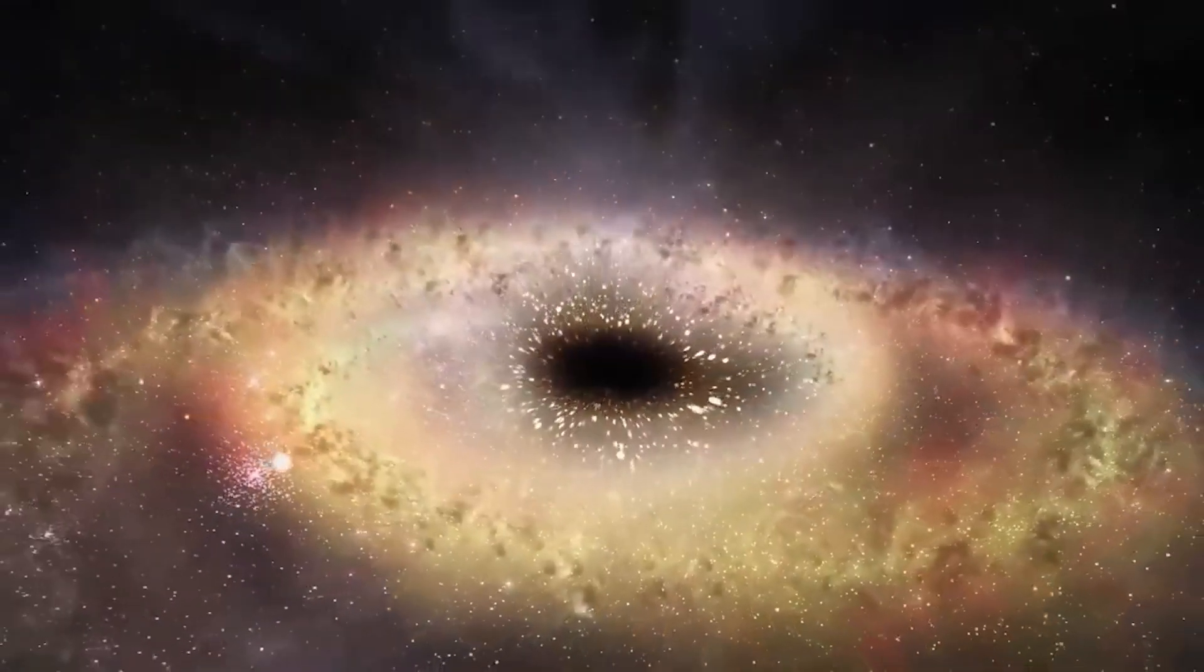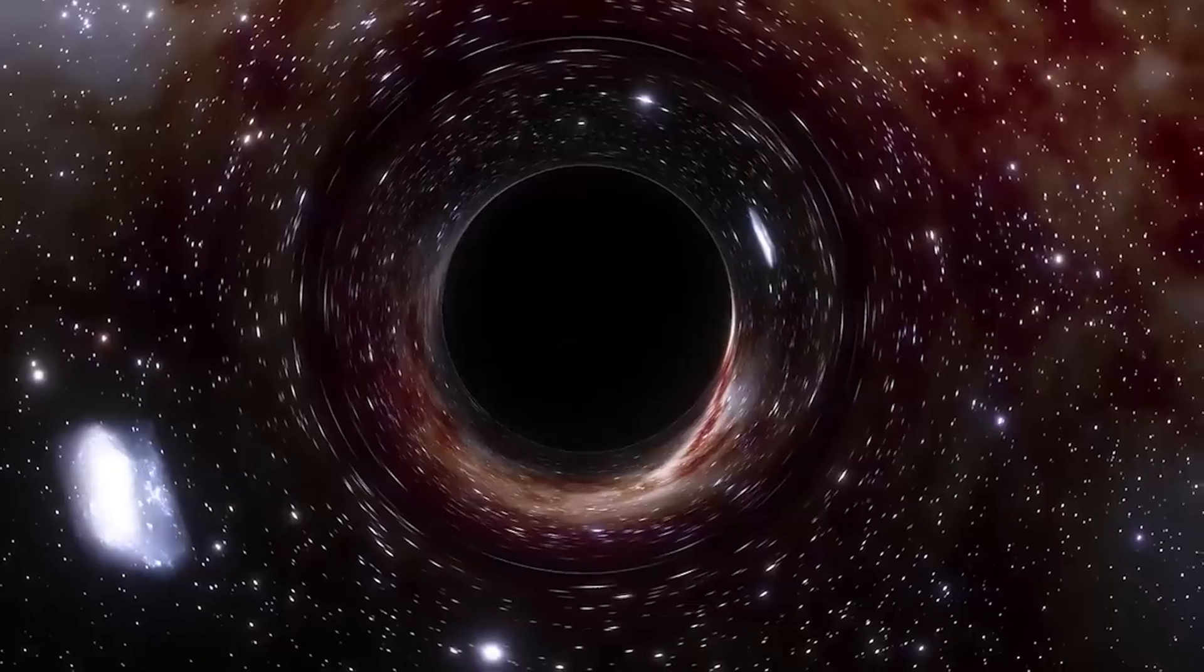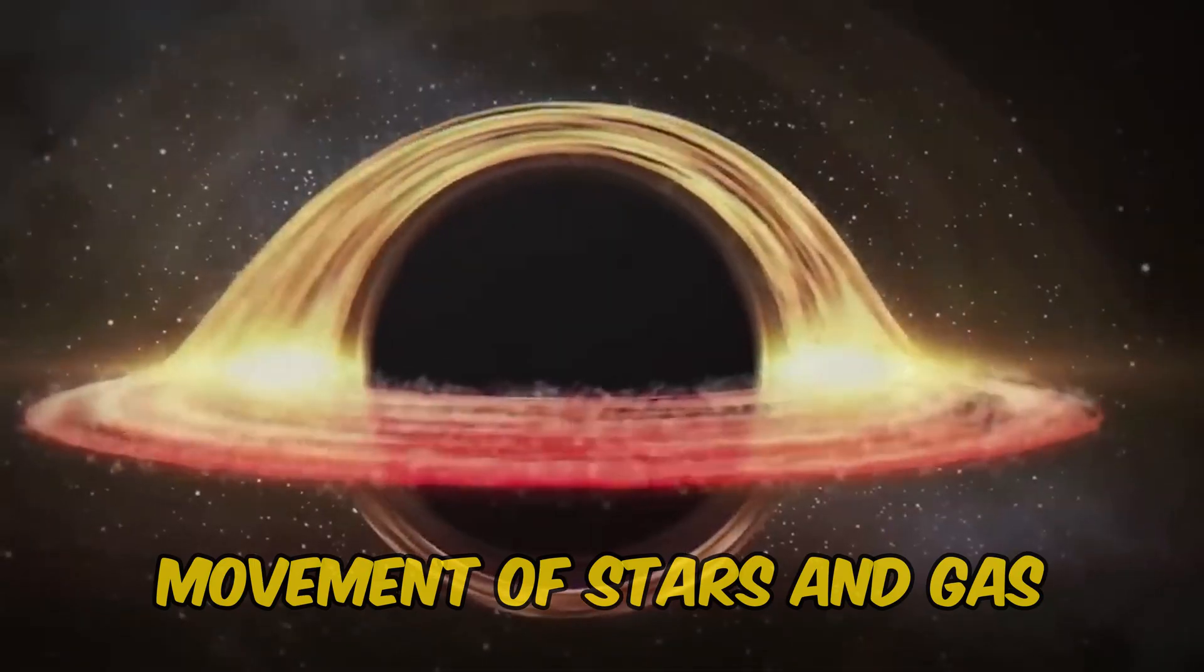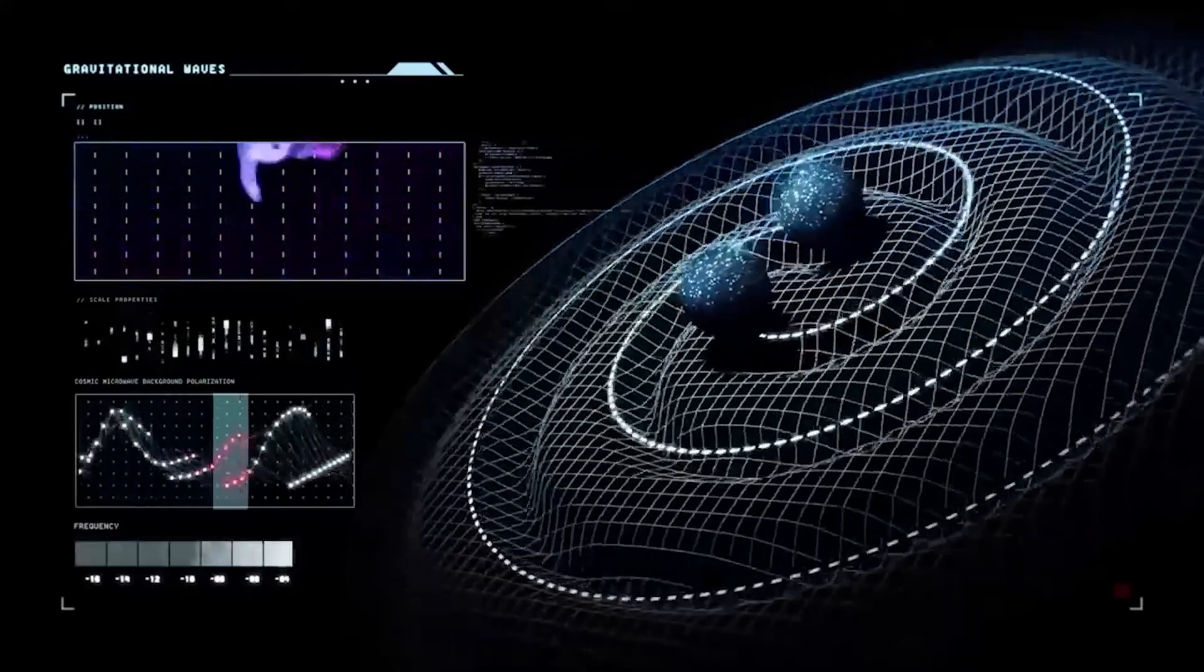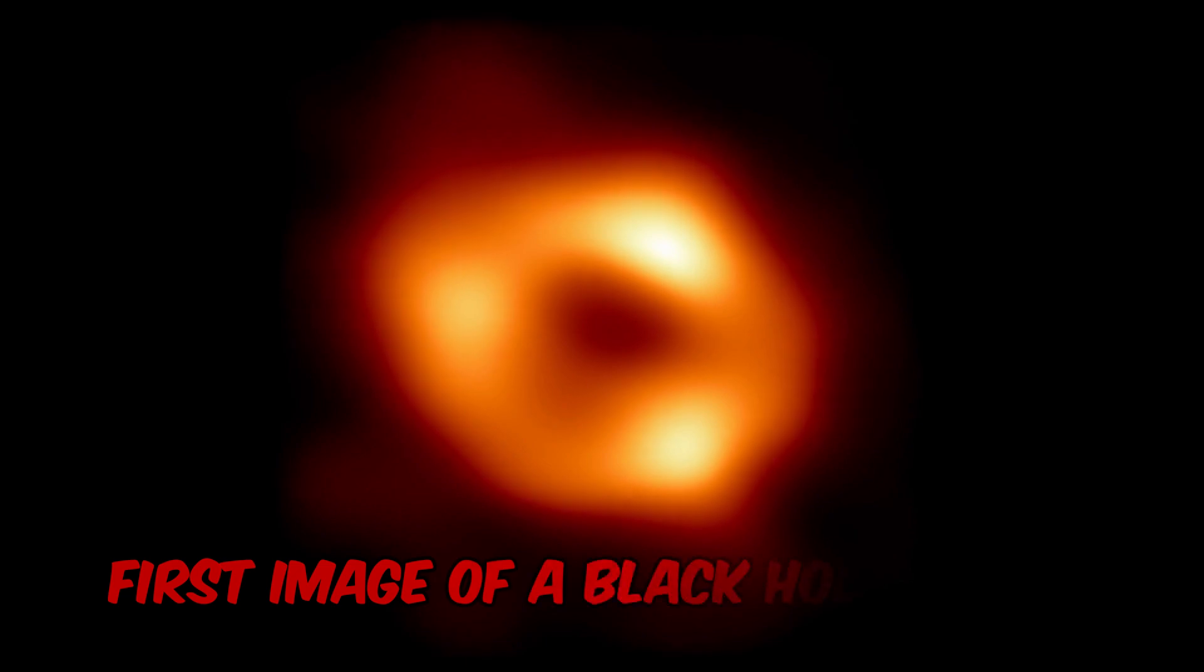Fact number 2. Let's address the intriguing fact that we can't directly observe black holes due to their immense gravitational pull. However, we can detect their presence by studying the movement of stars and gas around them. This indirect observation method has led to astonishing discoveries, including the historic first image of a black hole in 2019.